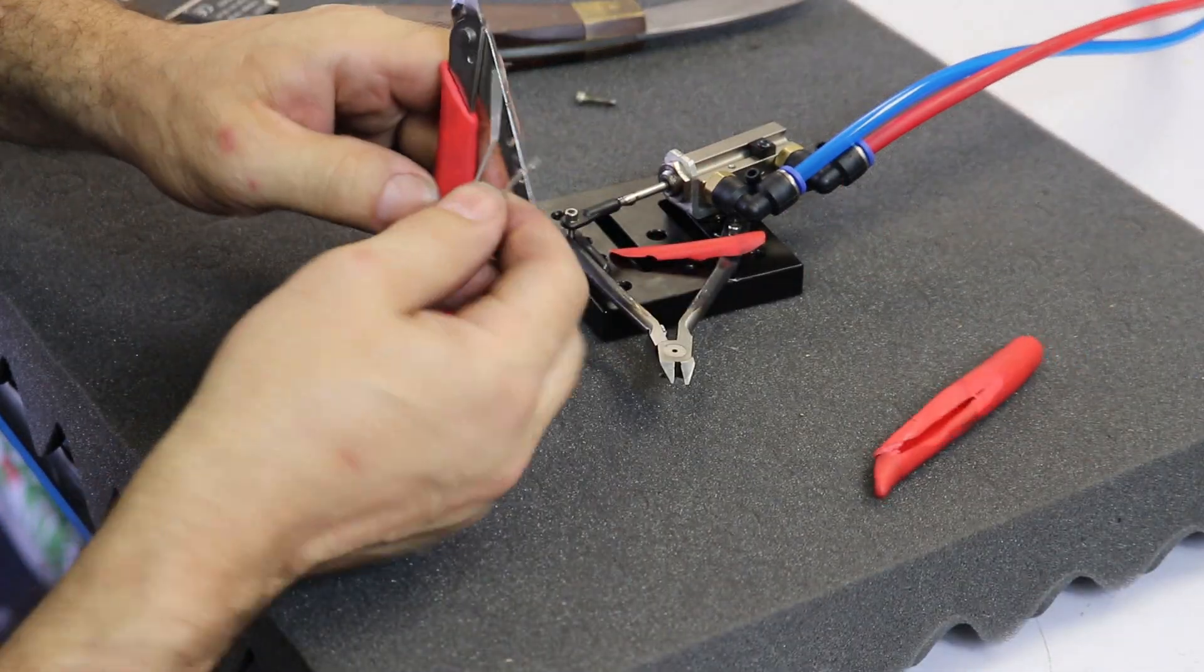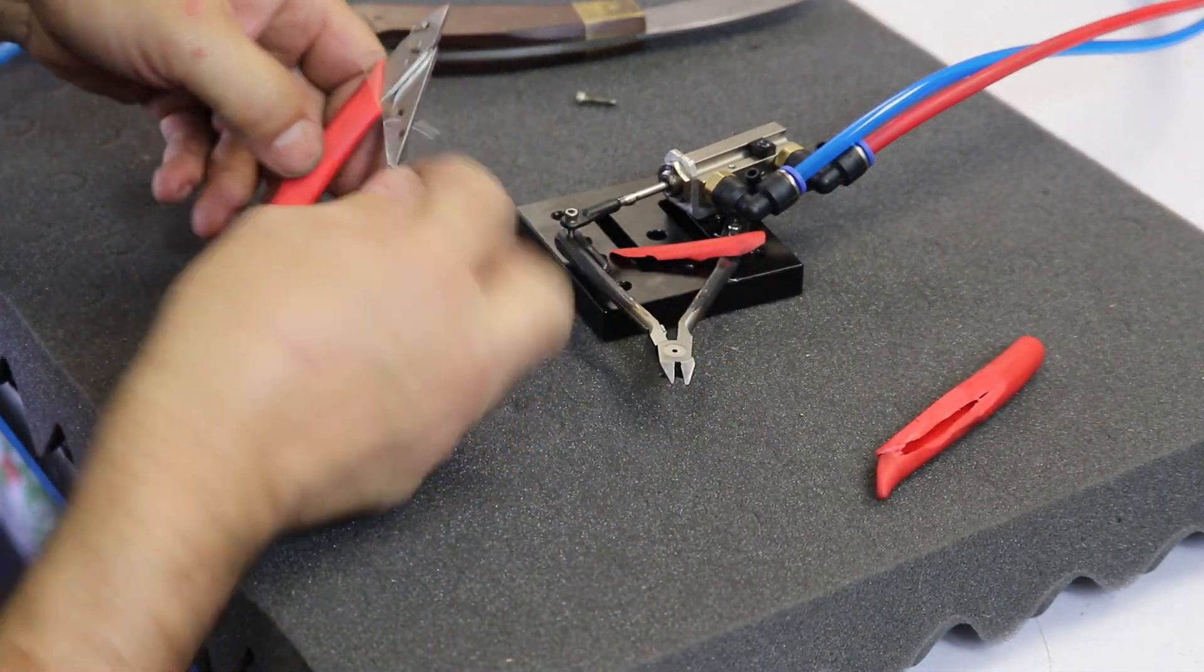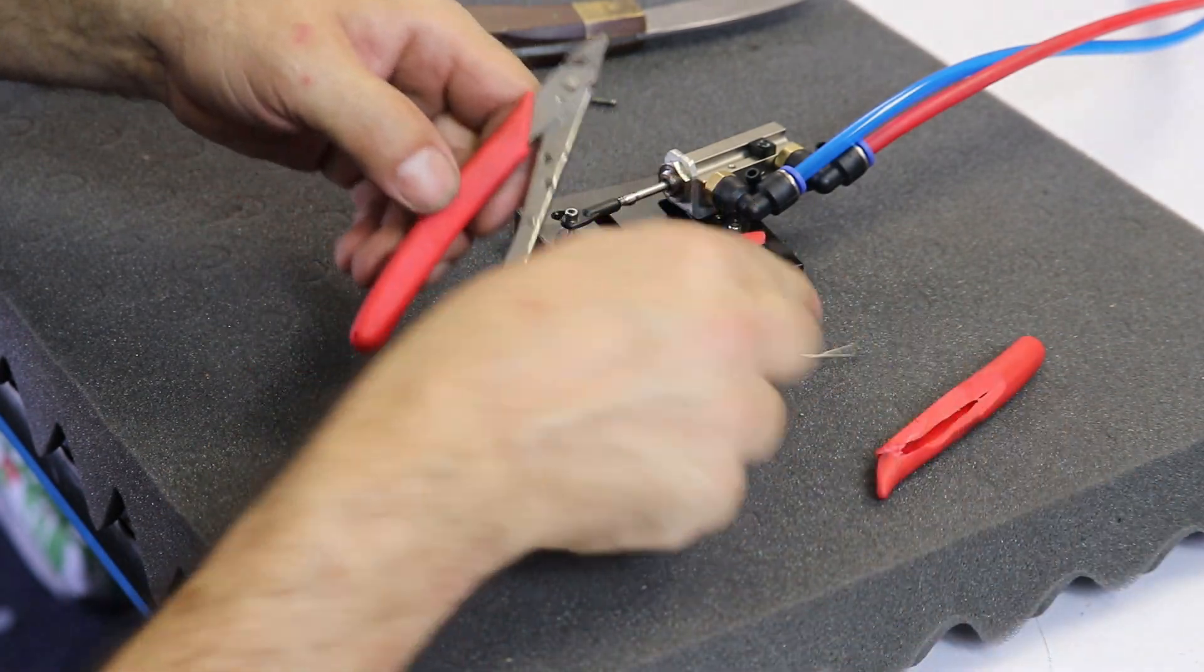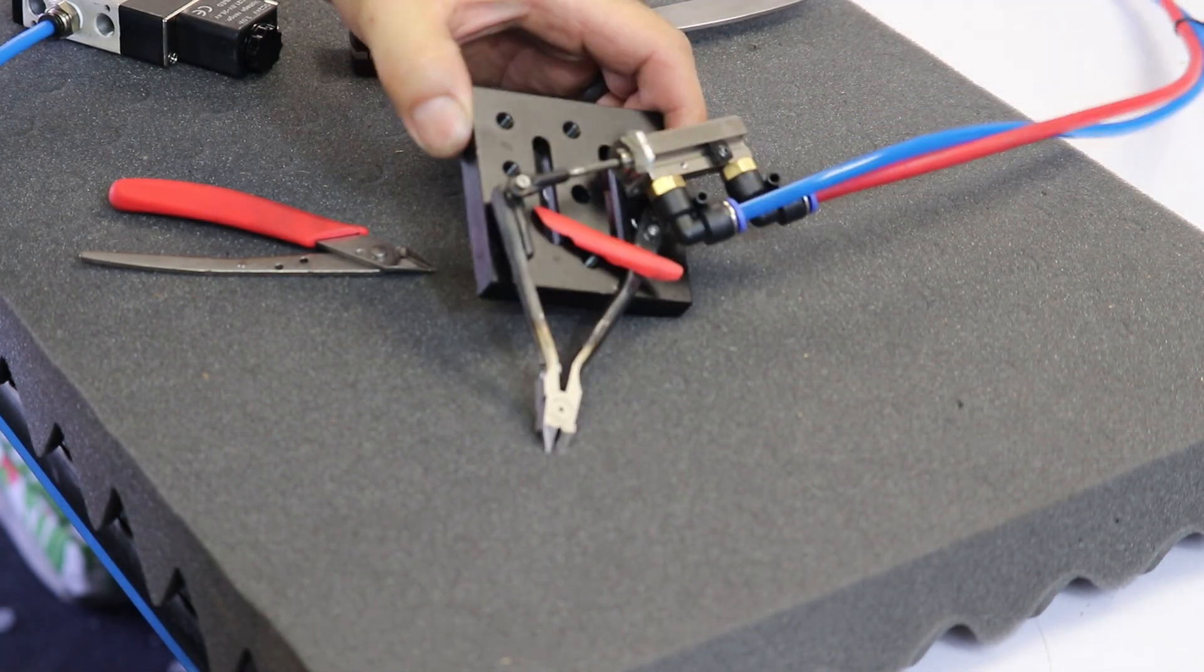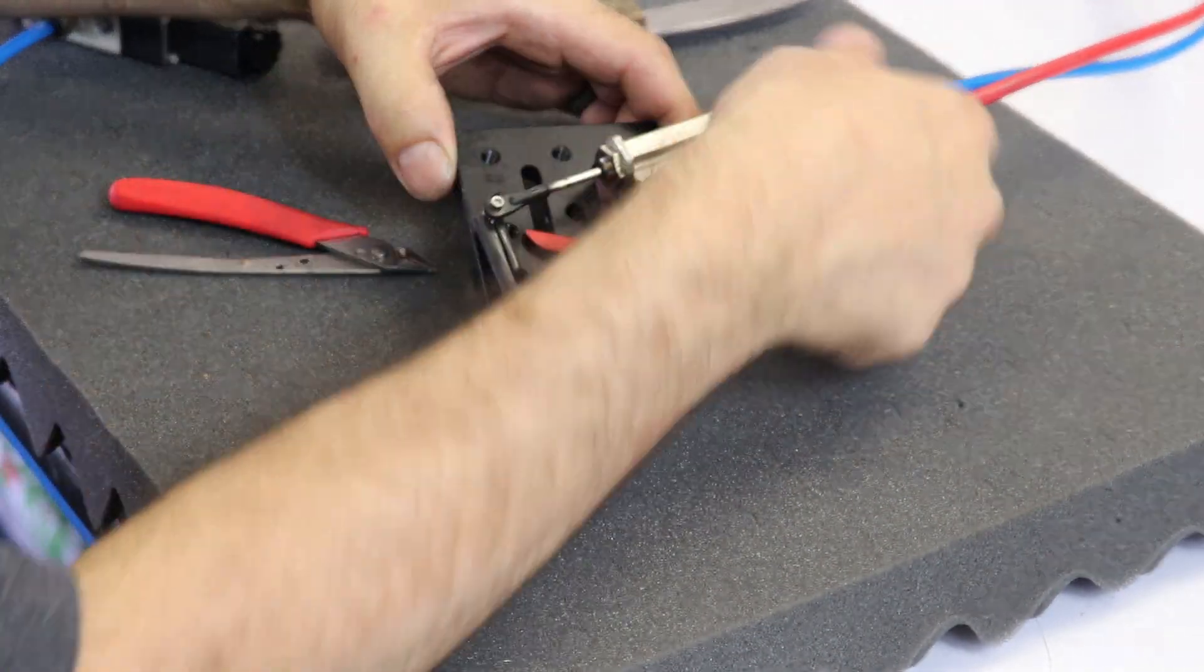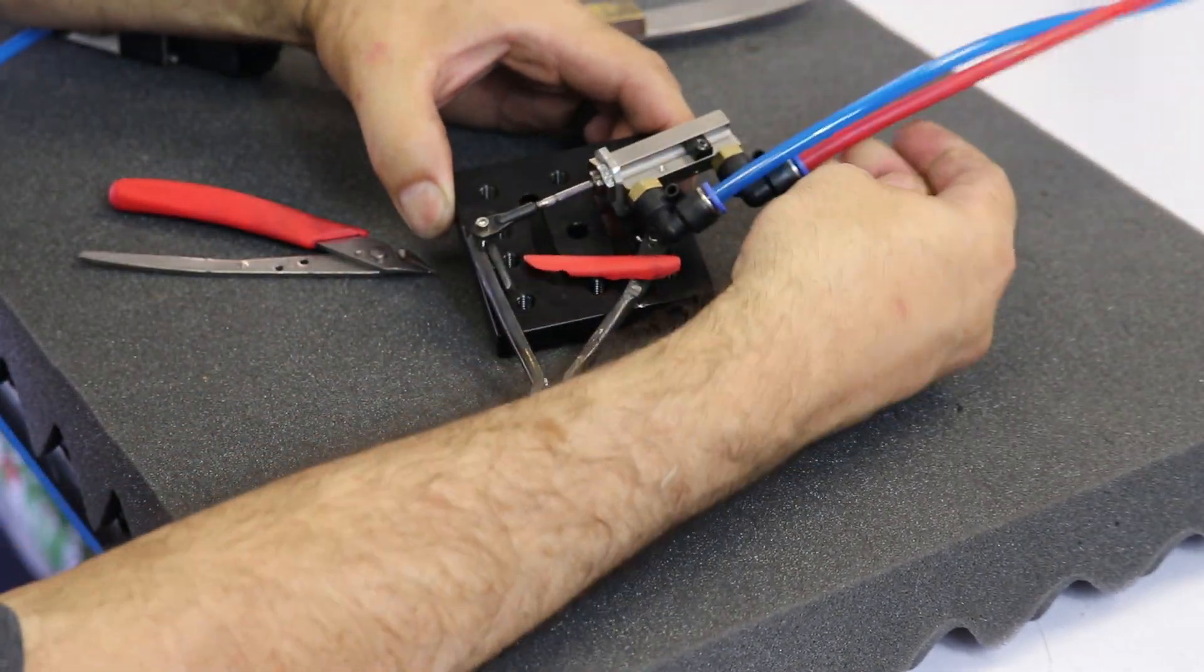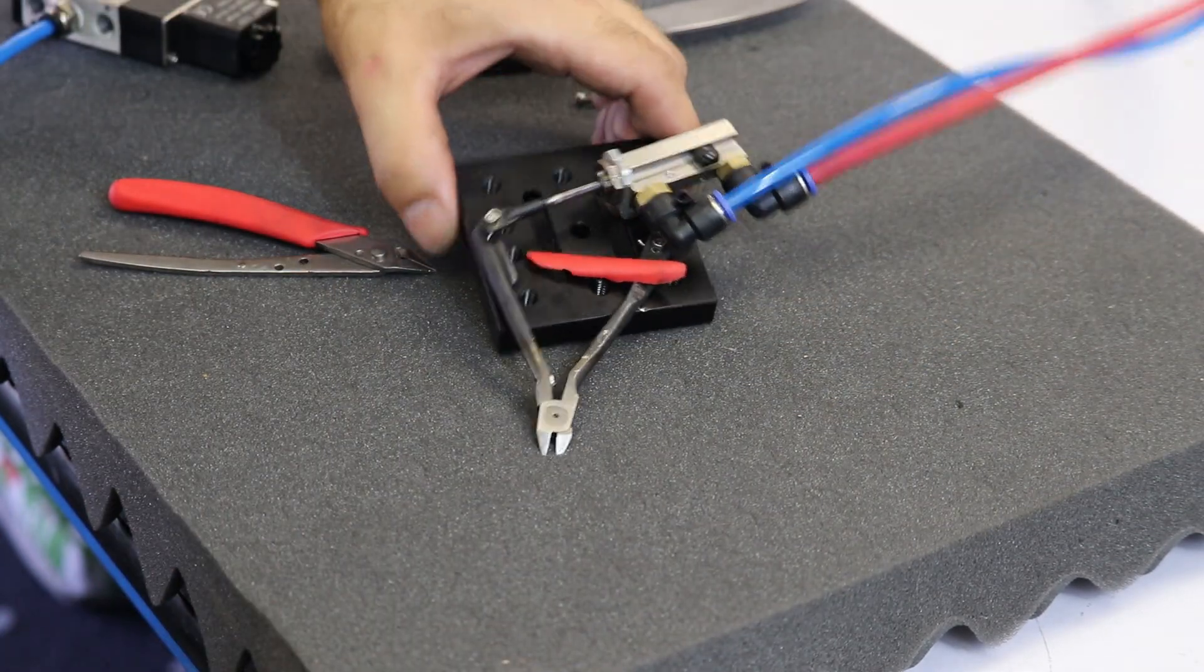And then they've got this spring here, which isn't really needed for the use case of this cutter because we have a double acting air cylinder. So the blue and the red lines are push and pull, which is nice.